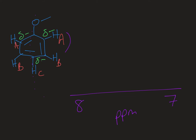HA has one neighbor, HB, so it would be a doublet, but there are two of them so it'd have an integration of two. That's going to be the most upfield and it's going to show up more towards seven. HC is going to be the next one because it also has that partial negative charge on it. It has two neighbors, these two HBs, so that's going to be a triplet. HC is going to be a triplet with an integration of one, and that's going to show up downfield of HA but still upfield of HB.